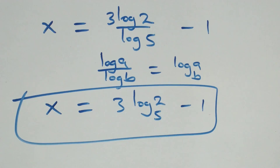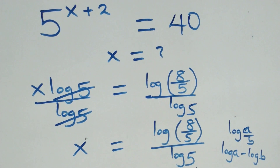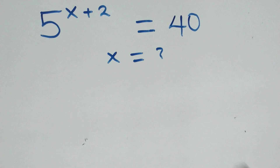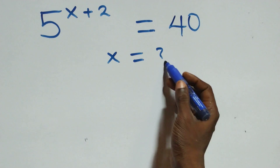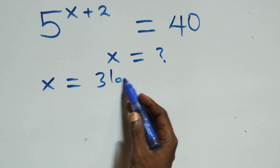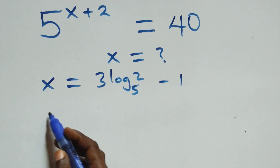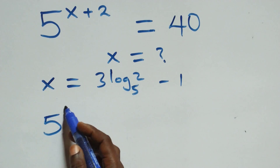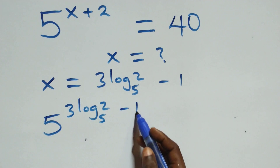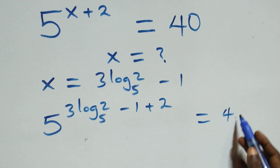Let's check whether this satisfies the given problem. We substitute x equals 3 log₅2 minus 1. What we have becomes 5 raised to the power (3 log₅2 minus 1 plus 2). Is this equals to 40?